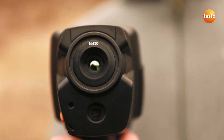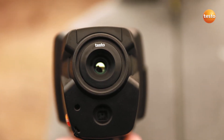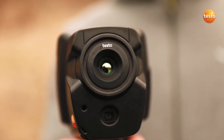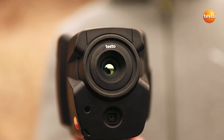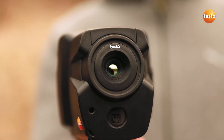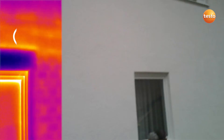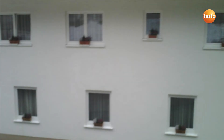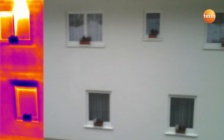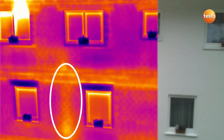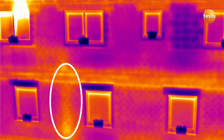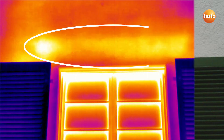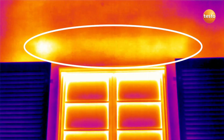Let's see which faults we can identify with the Testo 872 on the facade of this building: a cold bridge along the hole of the intermediate floor, the badly insulated riser of a radiator, and an unmistakable air leak at a window lintel.